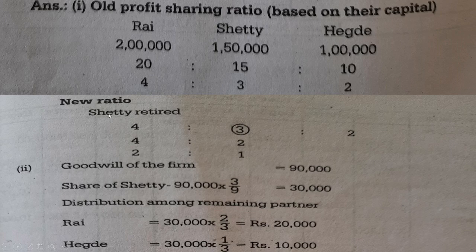The old profit sharing ratio based on capital works out to 4:3:2. The new ratio after Shetty's retirement is compared and the gain ratio is calculated. The gain ratio comes to 2:1.